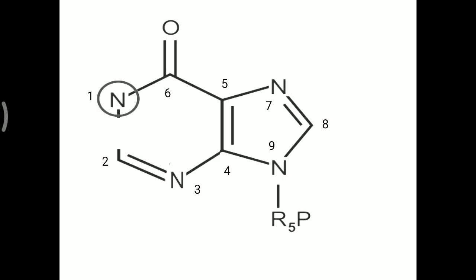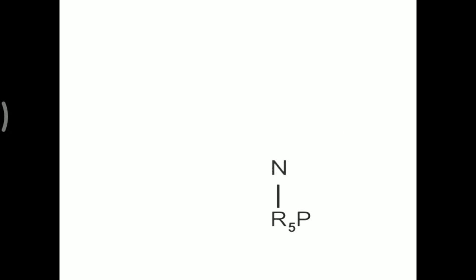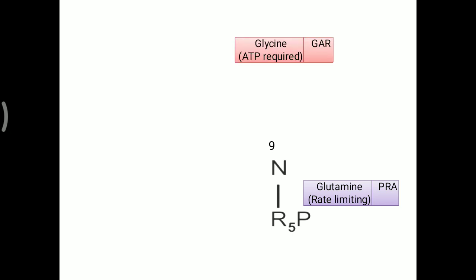In detail: starting from ribose 5-phosphate and PRPP, PRPP is attached with glutamine, making the first nitrogen for this purine ring formation. Glutamine addition is the rate-limiting step, forming the molecule PRA (phosphoribosylamine). The first position added is the 9th nitrogen for that purine synthesis.